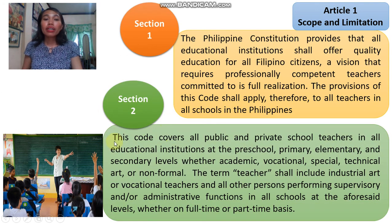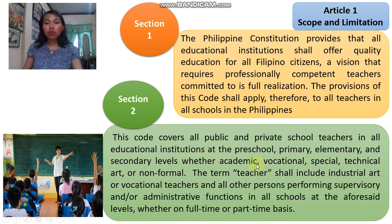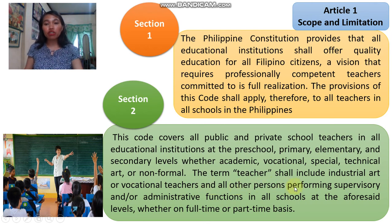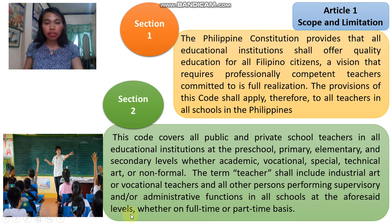Section 2: This code covers all public and private school teachers in all educational institutions at the preschool, primary, elementary, and secondary levels, whether academic, vocational, special, technical, art, or non-formal. The term 'teacher' shall include industrial art or vocational teachers and all other persons performing supervisory and/or administrative functions in all schools at the said levels, whether on full-time or part-time basis.